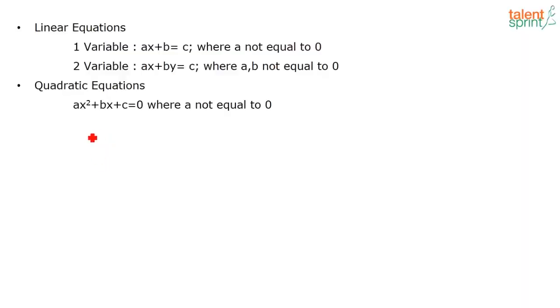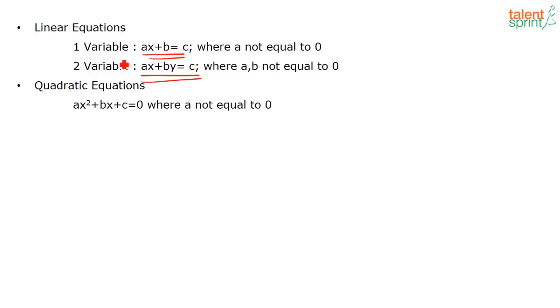Let me share my screen. What is a linear equation? An equation of the form AX + B = C is called a linear equation. Equations with one variable are of the form AX + B = C, and equations with two variables are of the form AX + BY = C. The highest power of the unknown variable is always 1, and the constant term with the variable should not be equal to 0 — so A is not equal to 0, and here A and B should not be equal to 0.